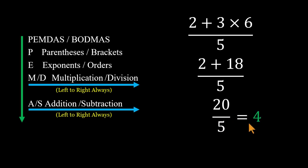So the correct answer is 4, not 6. That wrong 6 comes from ignoring the priority. Our minds naturally move left to right, but math asks us to follow order, not instinct.